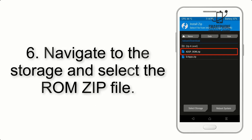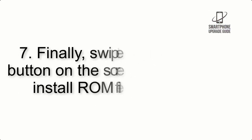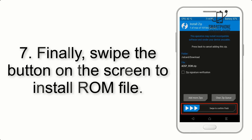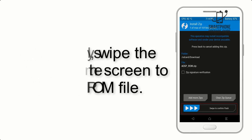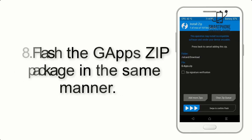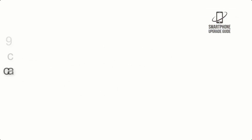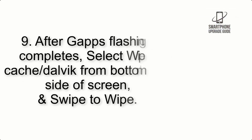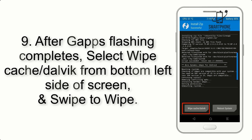Step 5: Go back to the recovery main screen and tap on the Install button. Step 6: Navigate to the storage and select the ROM zip file. Step 7: Swipe the button on the screen to install the ROM file. Step 8: Flash the GApps zip package in the same manner.